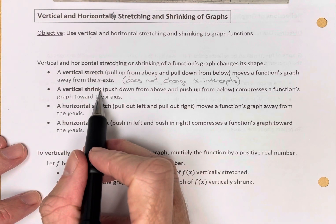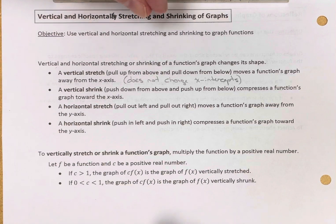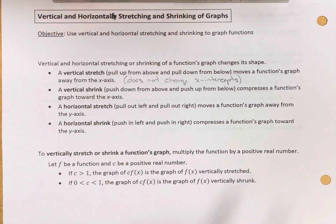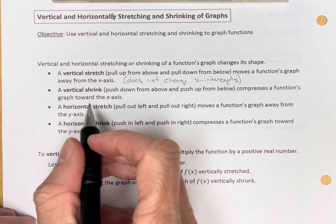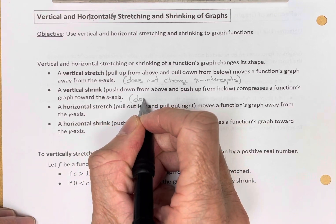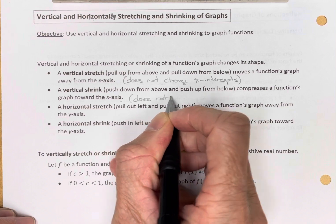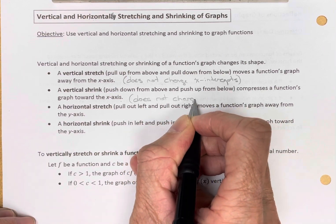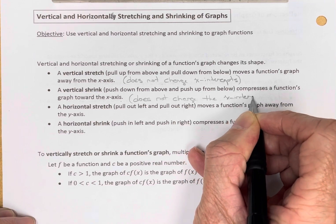A vertical shrink means you're going to push in down from above and push up from below. That compresses the function's graph toward the x-axis, and as with the vertical stretch, it's not going to change the x-intercepts. Important to know this.